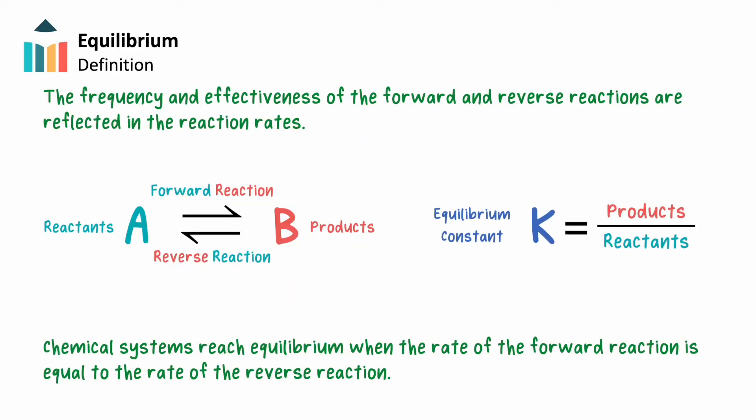The frequency and effectiveness of the forward and reverse reactions are reflected in the reaction rates. A chemical system reaches equilibrium when the rate of the forward reaction balances or is equal to the rate of the reverse reaction.